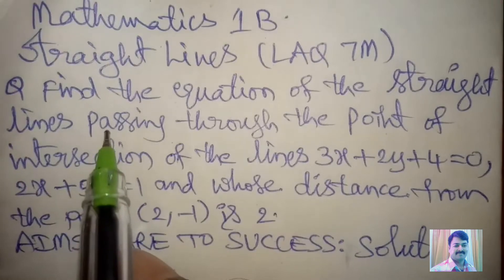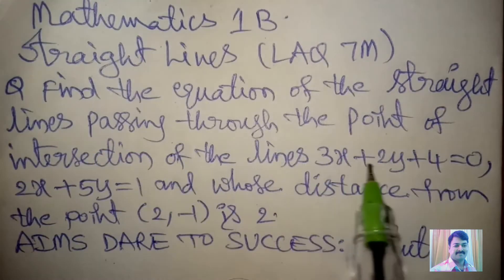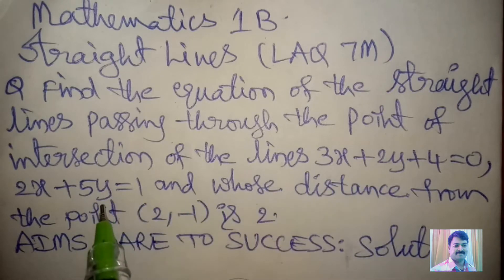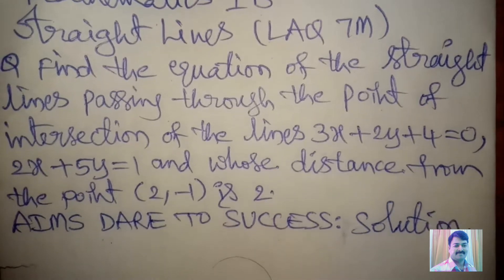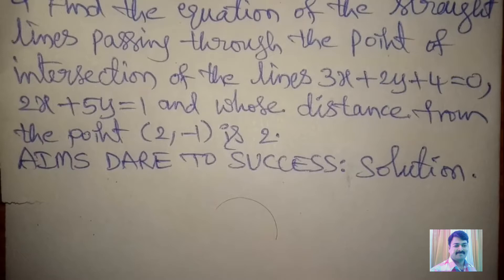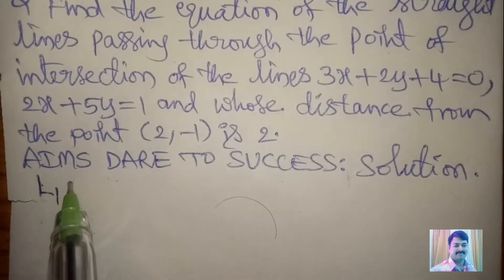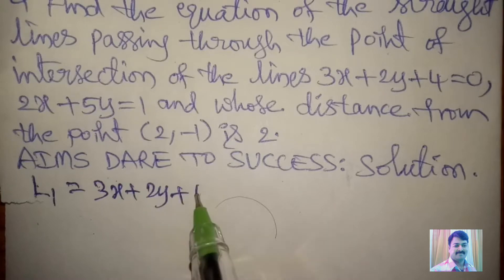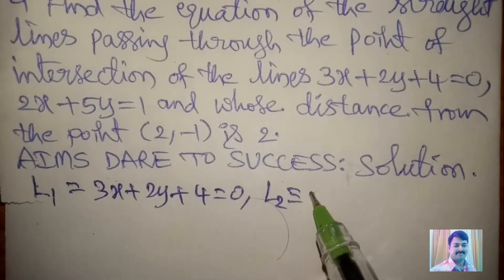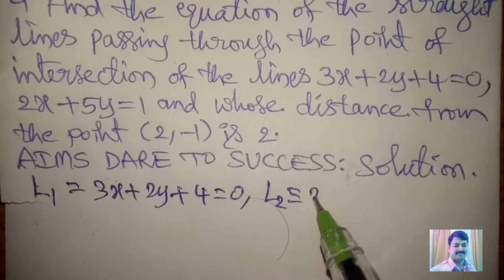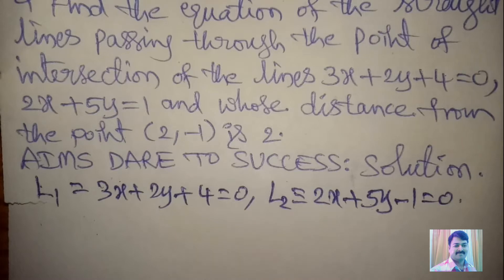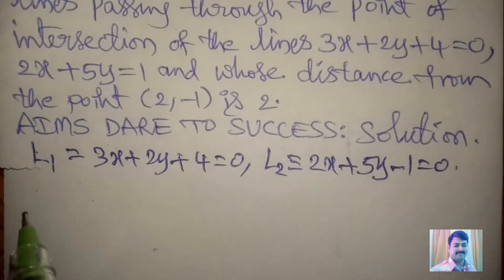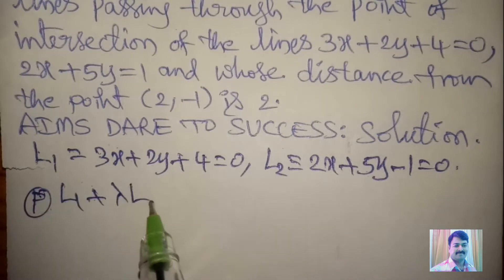We want to find two equations of straight lines passing through the point of intersection of the lines. We can find the point of intersection by using these two lines, after that applying the condition that the distance from the point (2, -1) is 2. Now I am starting the solution. We have the first line L1: 3x + 2y + 4 = 0, and the second line L2: 2x + 5y - 1 = 0. Our formula is L1 + λ·L2 = 0.